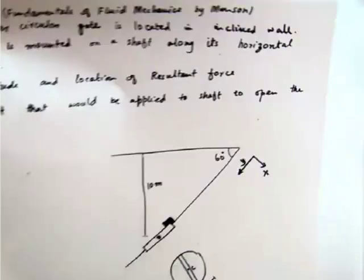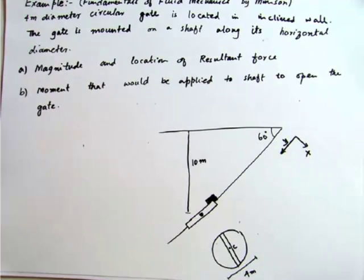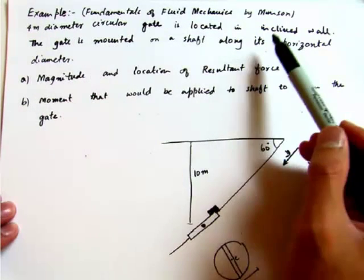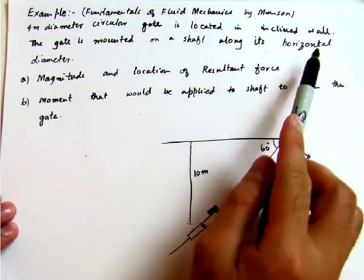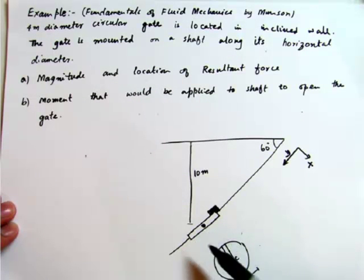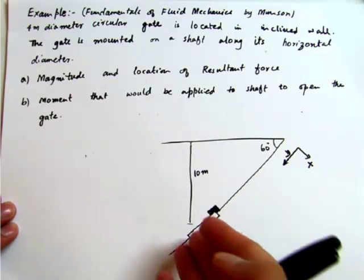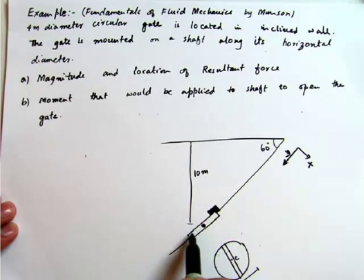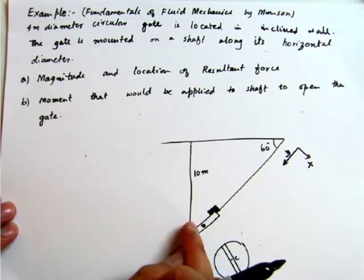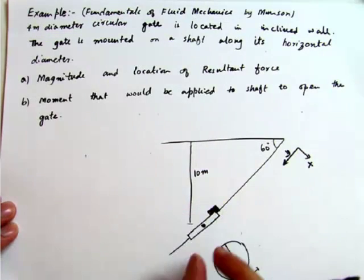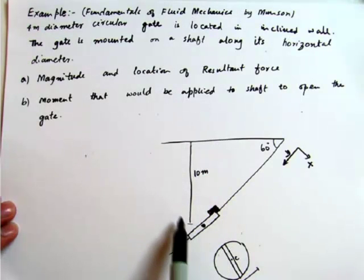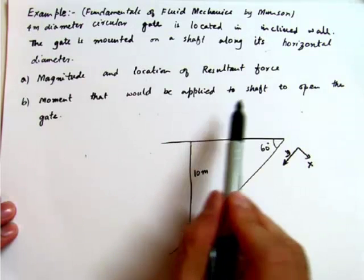Now let's look at an example. A 4-meter diameter circular gate is located in an inclined wall. The gate is mounted on a shaft along its horizontal diameter. Since the fluid pressure is higher lower down and lower higher up, there is a net tendency to rotate the gate, which is why there is a stop. We want to find the magnitude and location of the resultant force and the moment required at the shaft to open the gate.